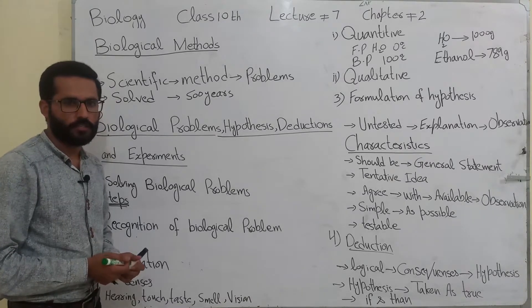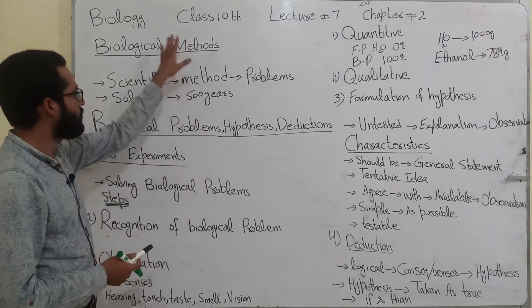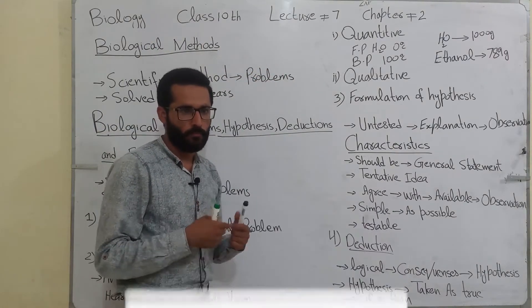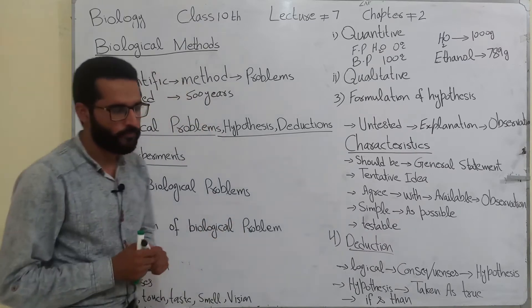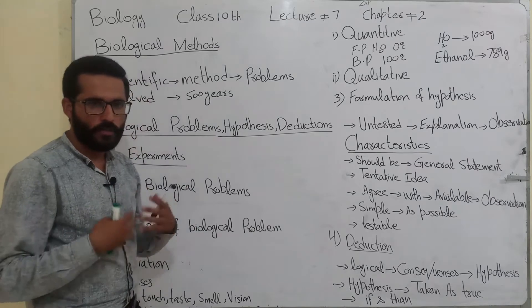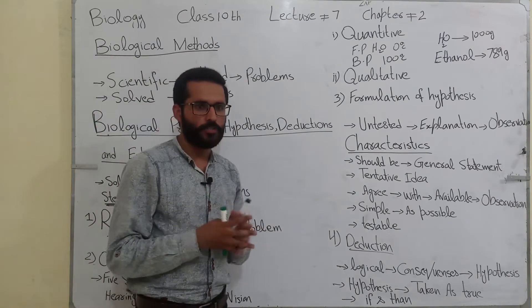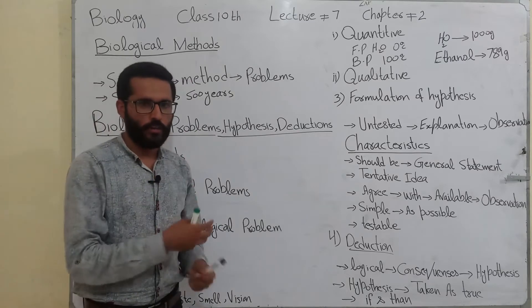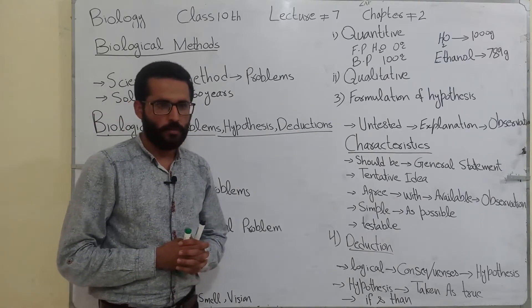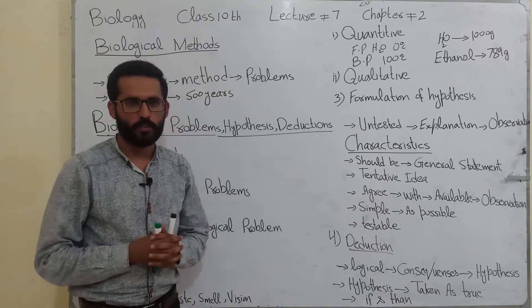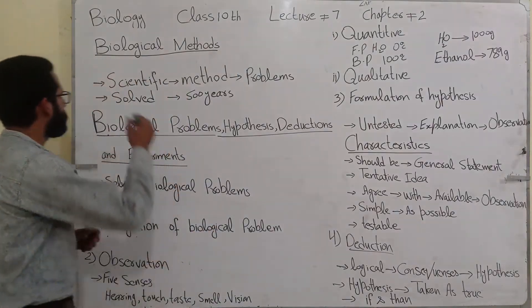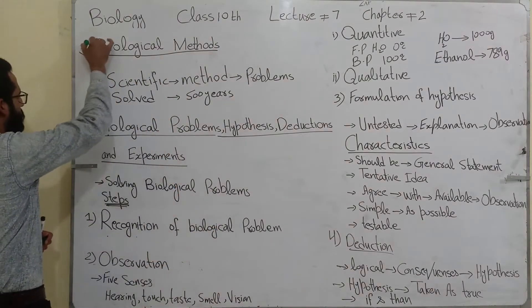Assalamu alaykum, my name is Yasir Riyas. Aaj ka humara lecture class 10 ki biology chapter number 2 mein se hai, jis ka naam hai 'solving a problem' — ki problem ko kaise solve karna hai. Actually, science is a systematic knowledge in which we solve problems. In case of biology, as modification involved according to evolution, we solve different types of problems with the help of biological methods. So we discuss about biological methods — what are biological methods?